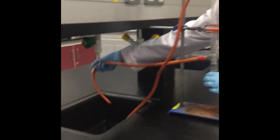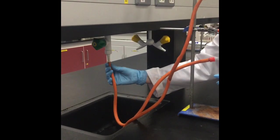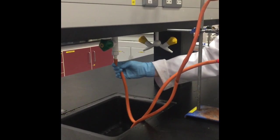Firstly, clamp your condenser to the retort stand. Connect the rubber tubing from the bottom of the condenser to the tap.